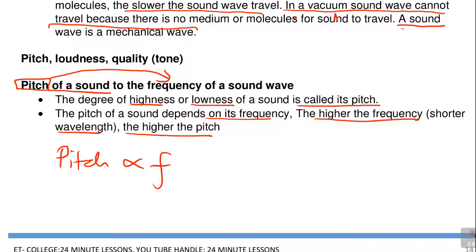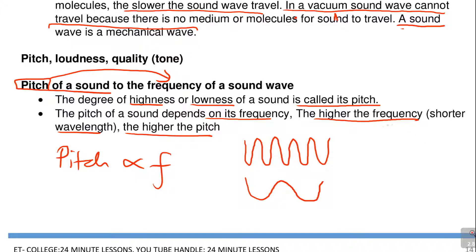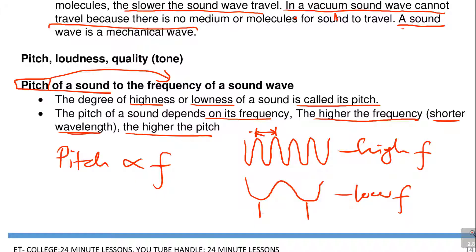Higher frequency means shorter wavelength — remember, frequency and wavelength are inversely related; when one is higher, the other is lower. A high frequency wave looks like this: the waves are closer to each other. A low frequency wave has waves further apart, giving a longer wavelength.